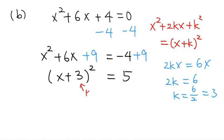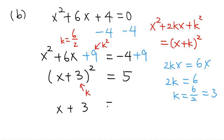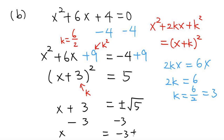k is half of the coefficient of x — half of the number in front of x. And k squared is the number you add to both sides of the equation. Now apply the square root method: x plus 3 equals plus or minus square root of 5. Subtract 3 from both sides, and we have x equals negative 3 plus or minus square root of 5. Those are the solutions.